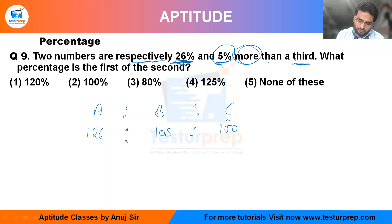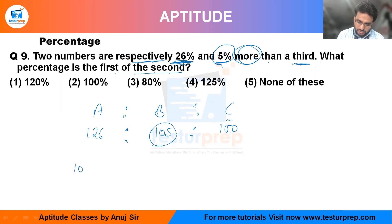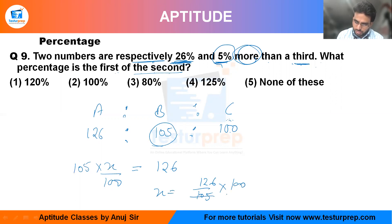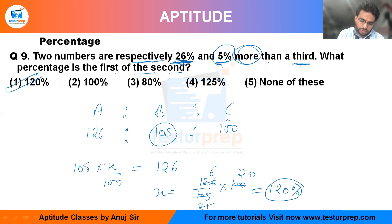Now the question asks: what percent is the first number of the second number? That means I need to find what percent of the second number gives me the first number. So: x percent of 105 equals 126. Solving for x: x equals 126 divided by 105, multiplied by 100. Simplifying — 126 over 105 reduces to give us 120. So the answer is 120 percent, which is option one.